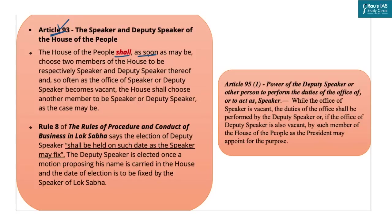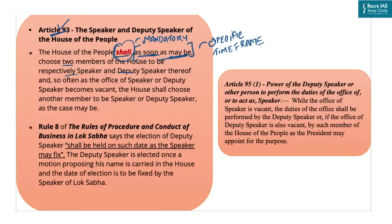Article 93 says the House of the People shall, as soon as may be, choose two members to be respectively Speaker and Deputy Speaker. The word 'shall' indicates that election of the Speaker and Deputy Speaker is mandatory under the Constitution; however, 'as soon as may be' reflects indecisiveness as it does not lay down a specific time frame. Rule 8 of the Rules of Procedure and Conduct of Business in Lok Sabha states that the election of the Deputy Speaker shall be held on such a date as the Speaker may fix — making it the Speaker's discretion.